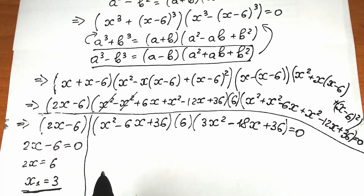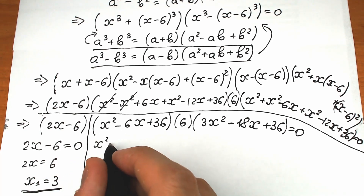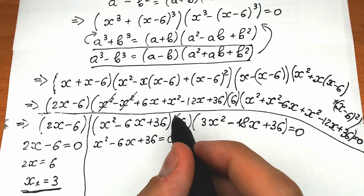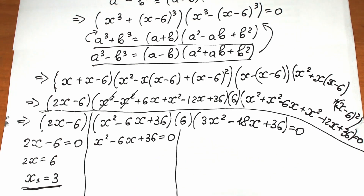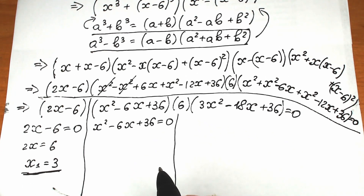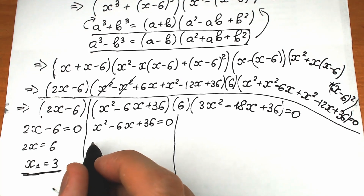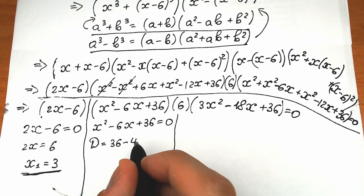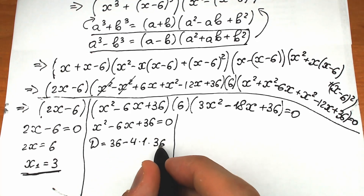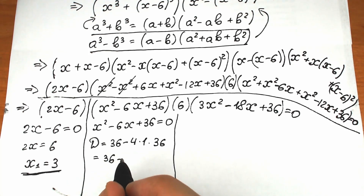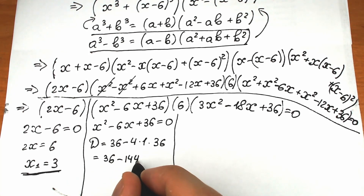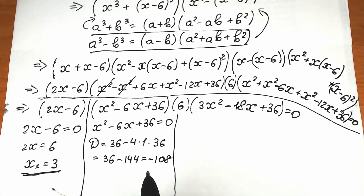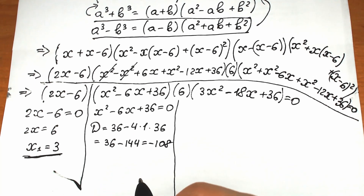Now let's solve the second parenthesis: x squared minus six x plus thirty-six equals zero. We compute the discriminant: D equals b squared minus four ac equals thirty-six minus four times one times thirty-six, which equals thirty-six minus one hundred forty-four, giving discriminant equal to negative one hundred eight. So we have complex roots here.